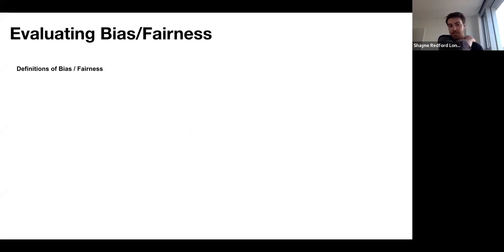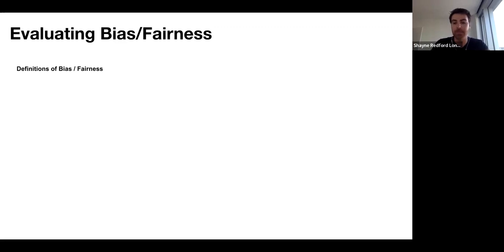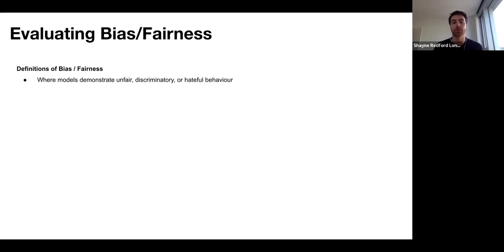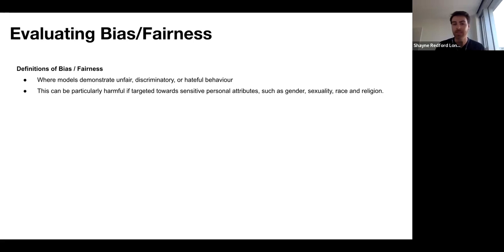Let's discuss definitions of bias and fairness. In reality, there's a plurality of applications and meanings such that there's not an obvious definition here, but in general we're going to be talking about applications where models can demonstrate unfair, discriminatory or hateful behavior. This can be particularly harmful if targeted towards sensitive personal attributes like gender, sexual orientation, race, culture and religion.